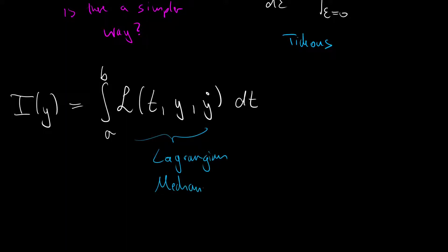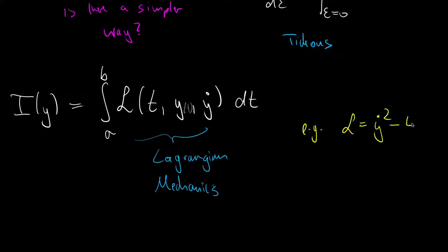This function is called the Lagrangian because we are talking about Lagrangian mechanics — don't be confused, this has nothing to do with Lagrange multipliers; it's just that Lagrange was a famous mathematician. Inside the Lagrangian we have dependency on t (the integration variable, think of time), y (the function itself), and y' (its first temporal derivative). In our case the Lagrangian was y' squared minus 4 times y, associated with an object falling with a certain mass and acceleration due to gravity. We now want to derive a general condition on L to minimize or optimize this functional.